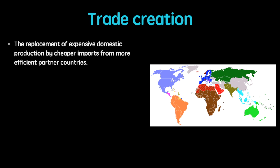Trade creation occurs when expensive domestic production is replaced by cheaper imports from more efficient partner countries. For example, by joining the EU a country may find that it is now able to import more cheaply from an EU partner country.